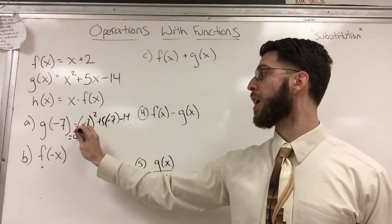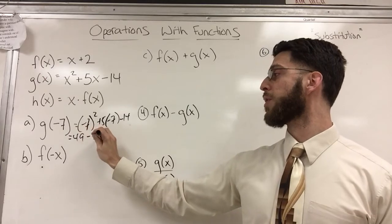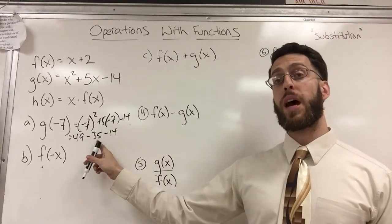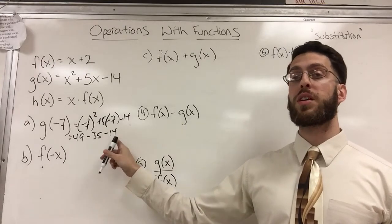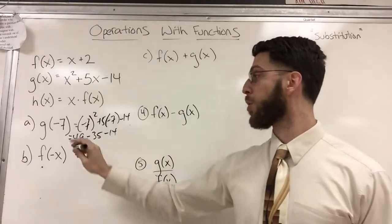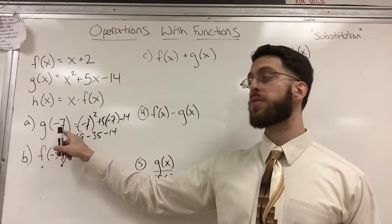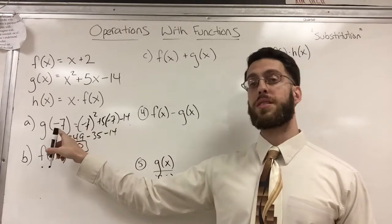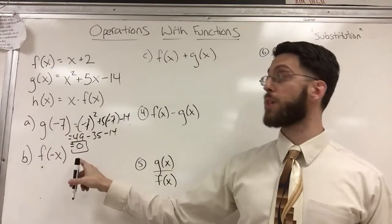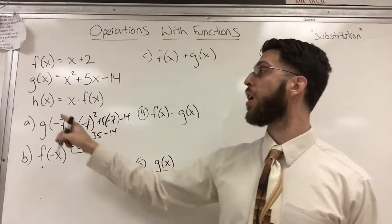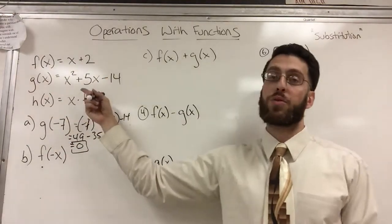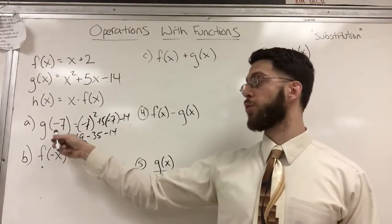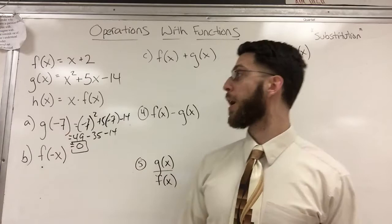That is 49 minus 35 minus 14. 49 minus 35 happens to be 14. And then 14 minus 14, zero. So g of negative seven is zero. And what that means is negative seven happens to be a zero or a root of this. And that was a coincidence. Really you can plug in any number and get any answer. I happen to have picked the root just for fun.